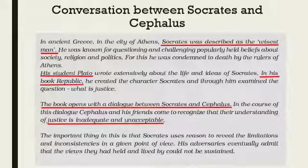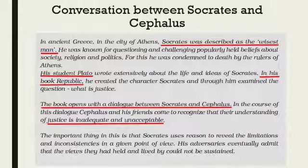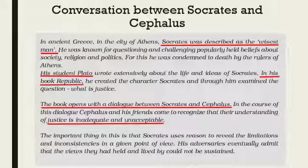Socrates' student was Plato, and Plato was too much devoted towards Socrates. Socrates was crucified by the rulers. You can read about this in the first paragraph of the conversation. Because Socrates told the people about the right facts regarding politics, the rulers of that time sentenced him to death.